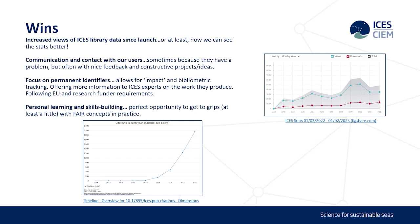Some wins: we can now see our statistics much more easily using DOIs. It's been a very good opportunity for communication with users we haven't heard from before, which has been great — we get nice feedback and constructive ideas. The focus on permanent identifiers allows us to track impact and bibliometric tracking as well. And personally, my colleagues and I have had a really good chance for personal learning and skills building, getting to grips with FAIR concepts in practice in the workplace. Thank you very much for your attention — I'm open to questions.